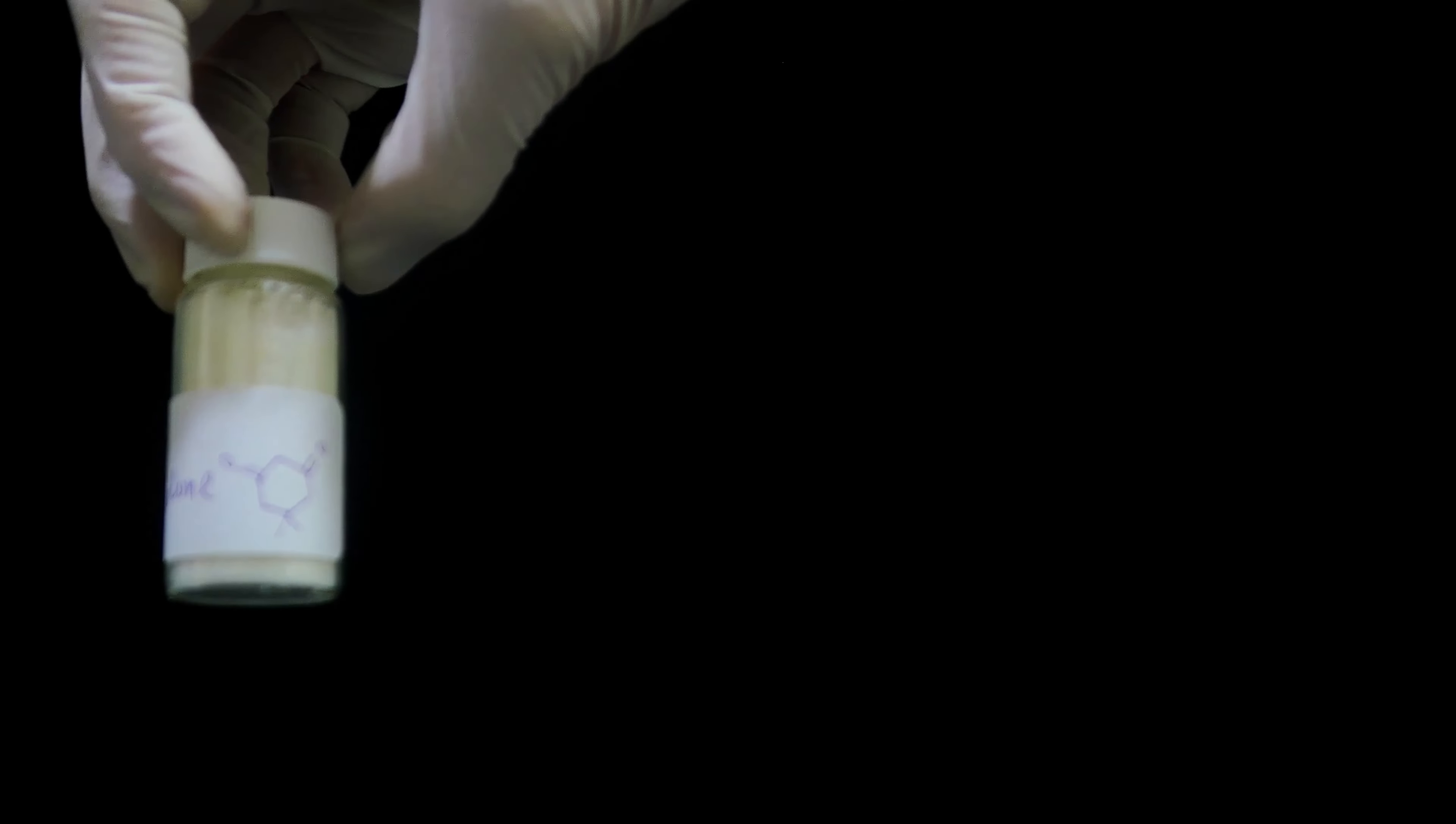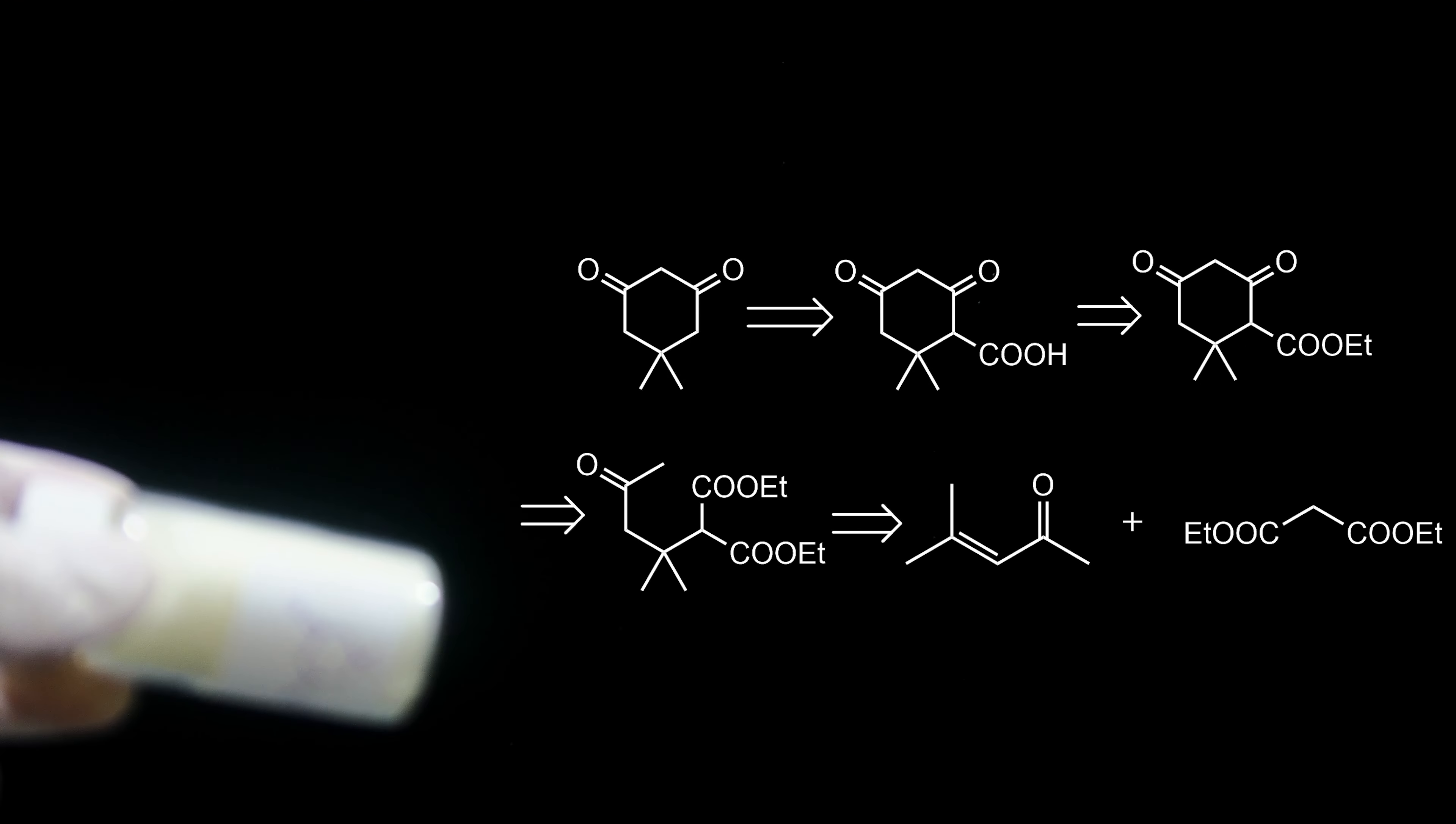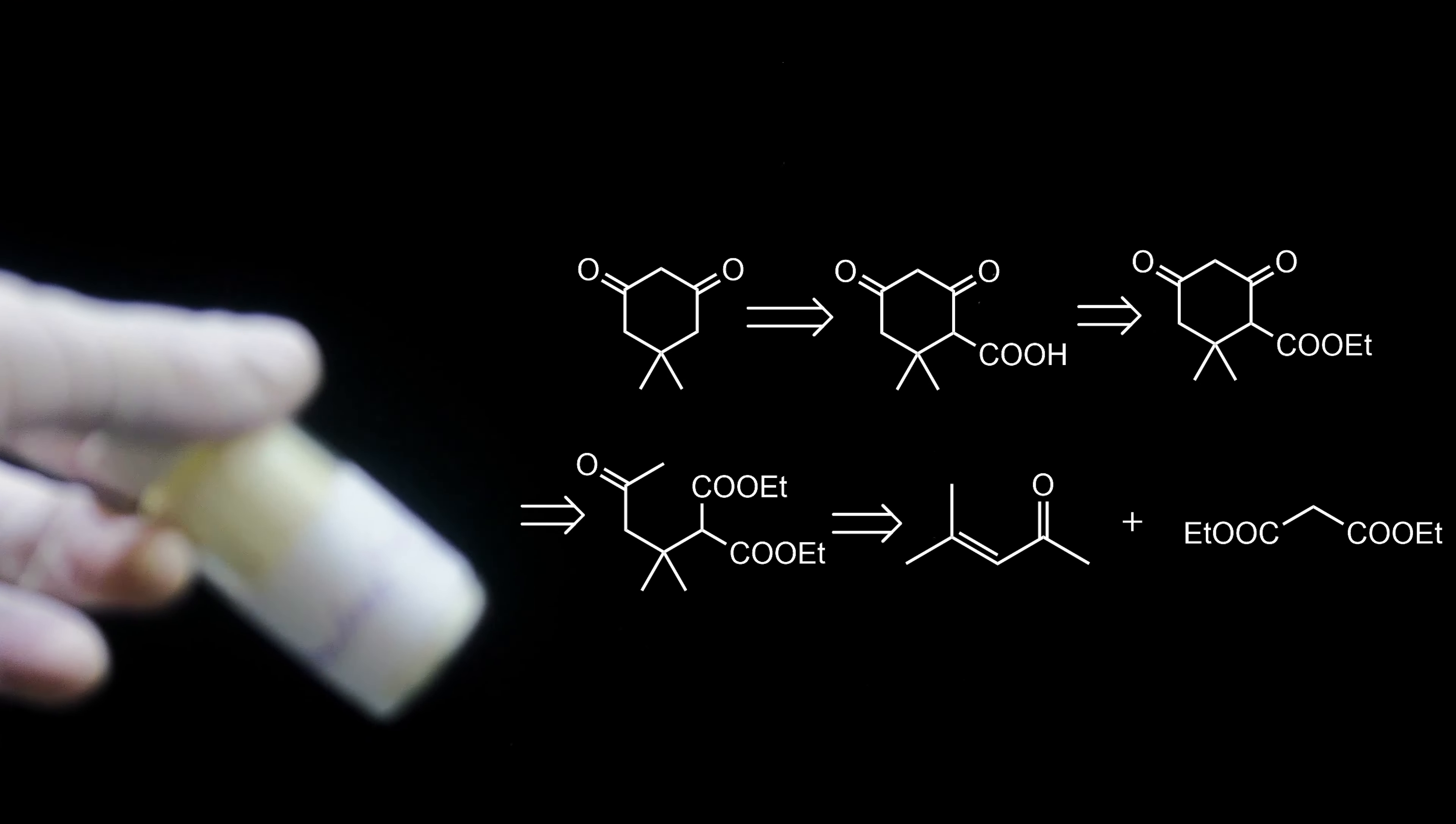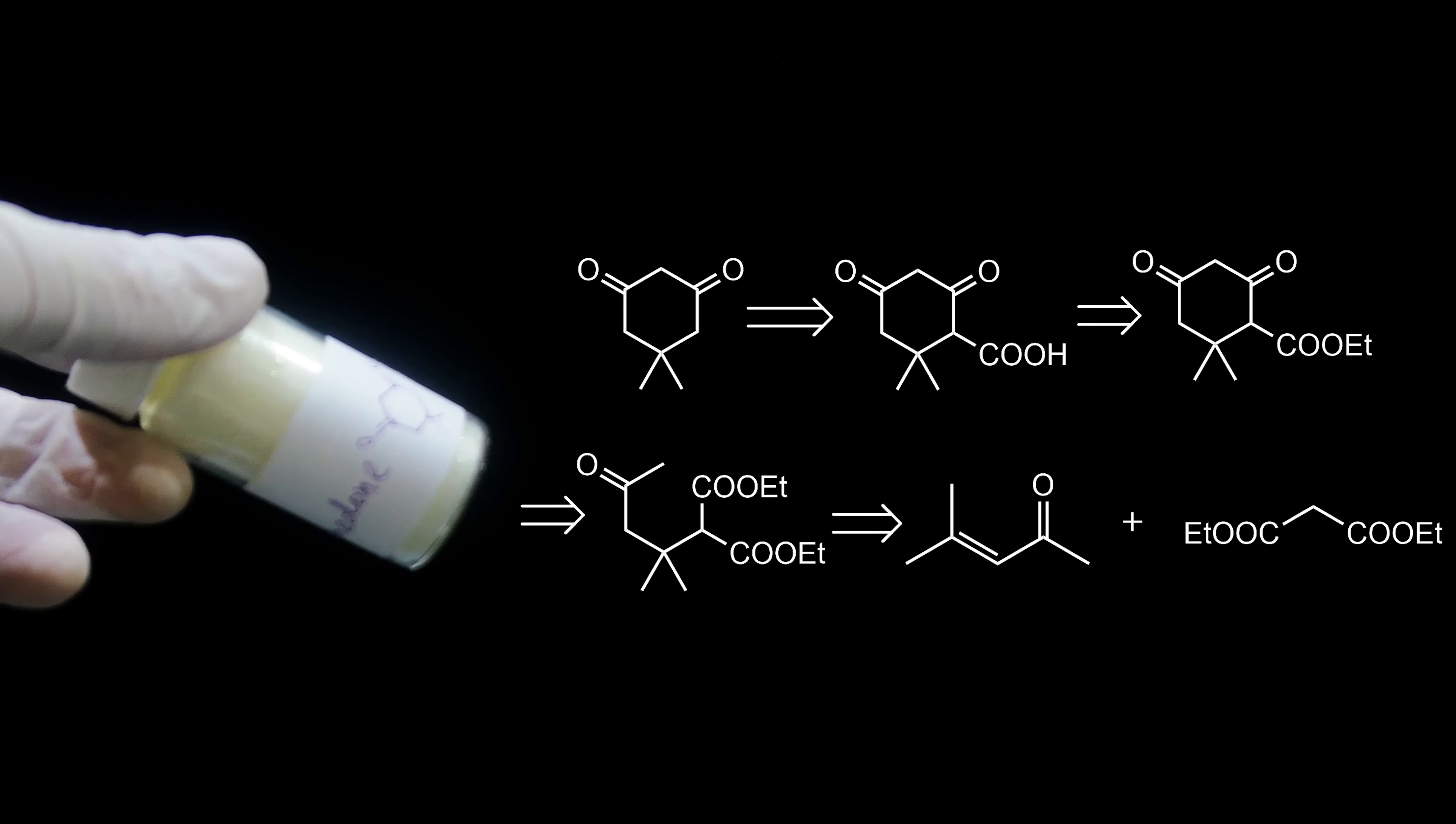Before we start the project, let's look at the retrosynthesis. The dimedone can be generated by decarboxylation, and this can be generated by mixed Claisen-like condensation to open the ring.